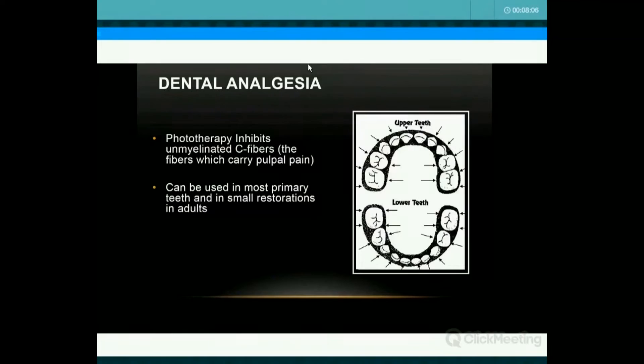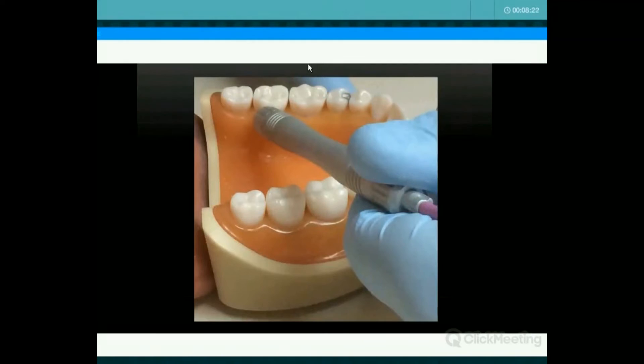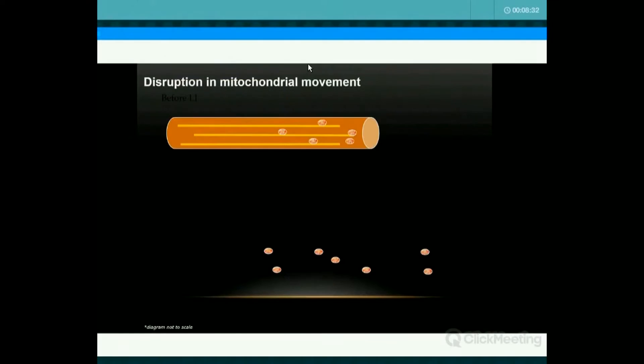On the primary teeth, you apply it buccal and lingual. We're trying to inhibit the pain — it's the C fibers that we're dealing with, always inhibition. You can do it with the single tip for one tooth or the larger tip if it's multiple teeth. With the larger tip, you're doing both the CEJ and apex at the same time.